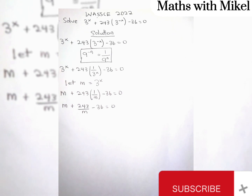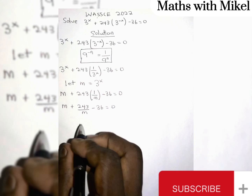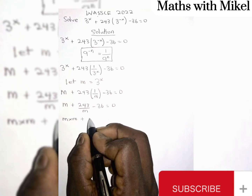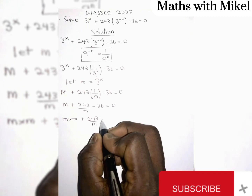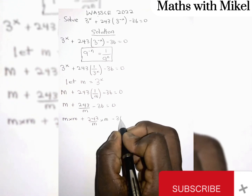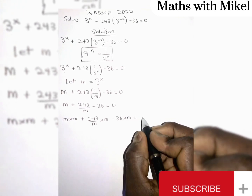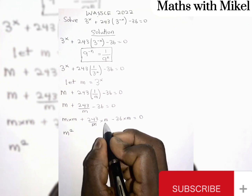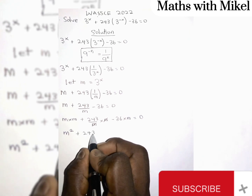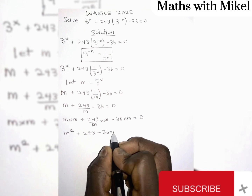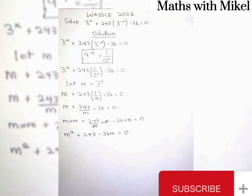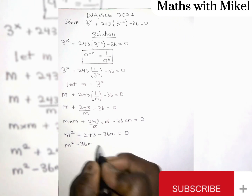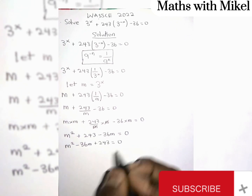Now we find the LCM, and our LCM here is m. So we multiply through by m: m times m plus 243 over m multiplied by m, and negative 36 also multiplied by m, and m times 0 is still 0. So we get m squared plus 243 minus 36m is equal to 0. Rearranging: m squared minus 36m plus 243 is equal to 0.